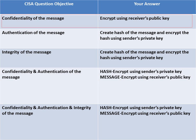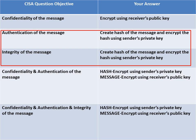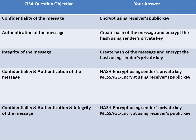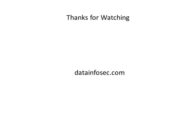Let us have a final recap. If the exam question objective is confidentiality, the answer is: encrypt using the receiver's public key. If the objective is authentication or integrity, the answer is: create a hash of the message and encrypt the hash using the sender's private key, because the sender's private key is something unique. If the objective is confidentiality and authentication, or confidentiality, authentication, and integrity, there will be two factors: the hash is encrypted using the sender's private key, and the message is encrypted using the receiver's public key. Thank you for watching. Please visit datainfosec.com for more such videos.